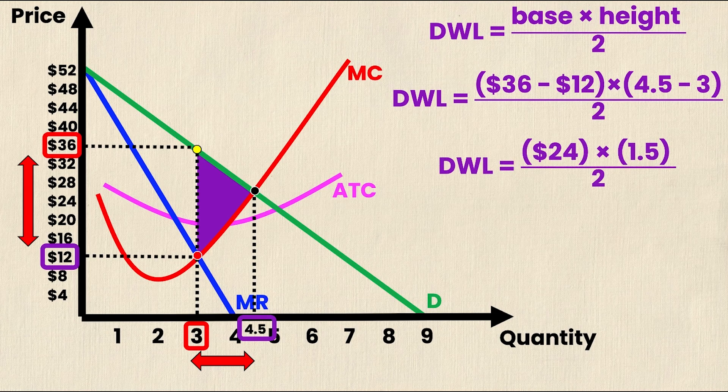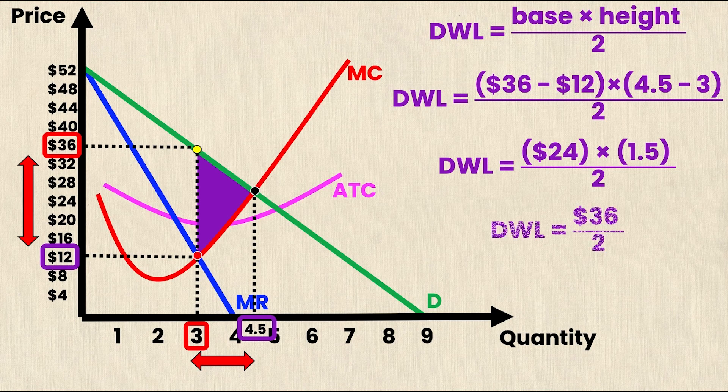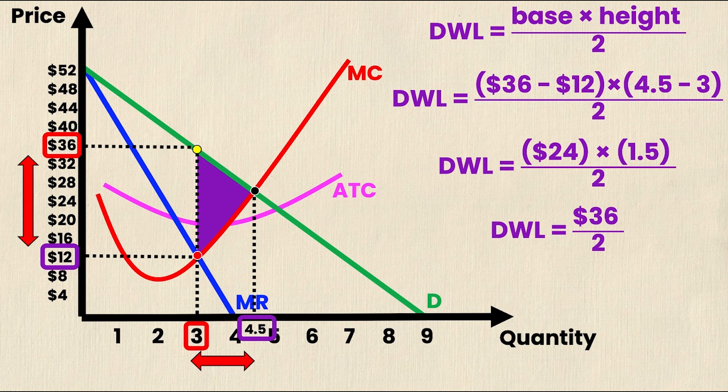Simplifying this further, we get deadweight loss is equal to $24 times 1.5 divided by 2. Deadweight loss is equal to $36 divided by 2. And then finally, deadweight loss must be $18. And that's our solution.